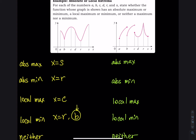The point x equals b counts as a critical point because f prime of b is undefined. When x is less than b the slope is decreasing, at b it is undefined, and when x is greater than b the slope is increasing — going down, undefined, then going up — so we have a local minimum there.